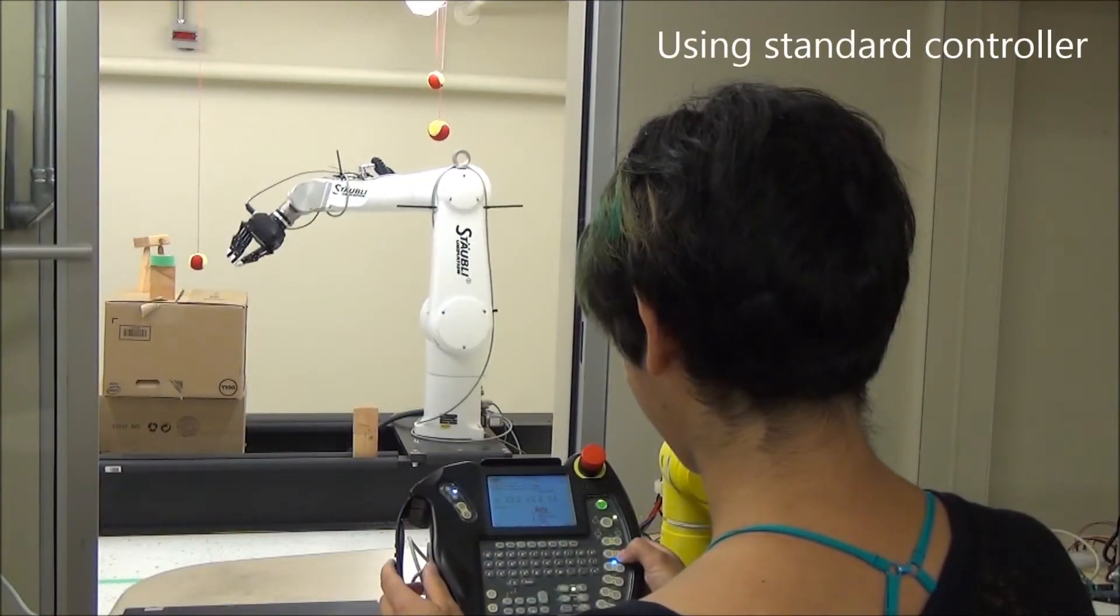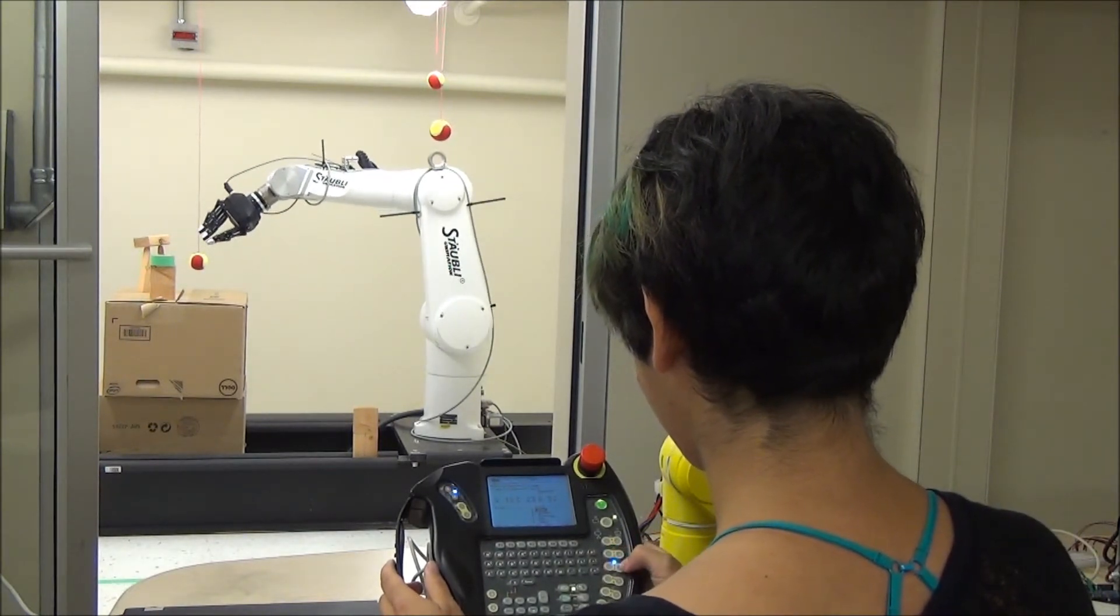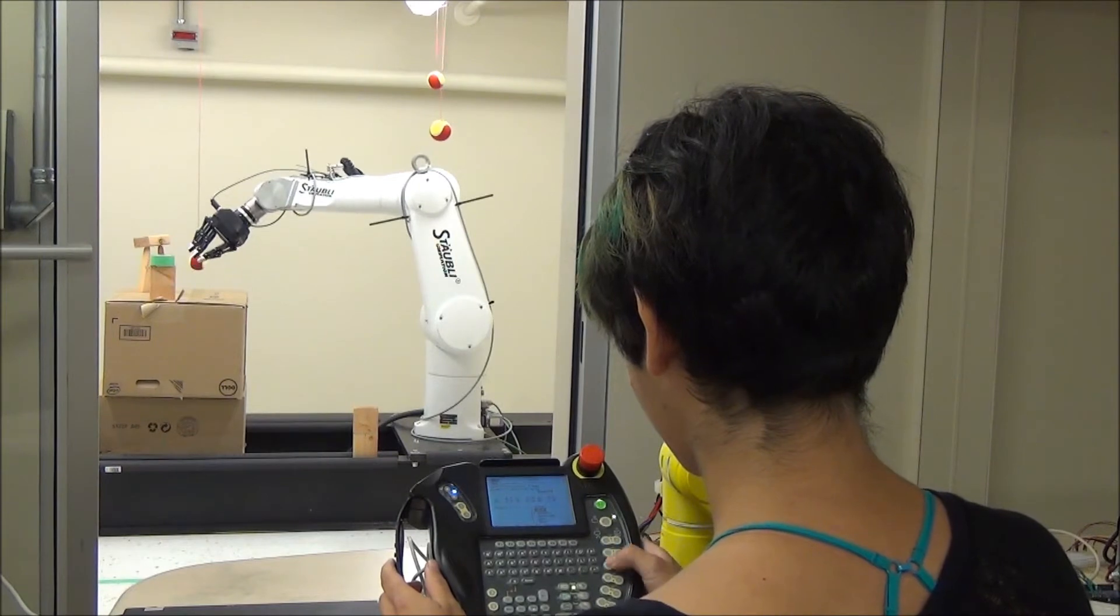Robots are teleoperated by humans in many applications, but a common challenge for users is to learn a mental map of the correspondence between the input device and the target robot.